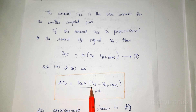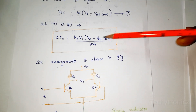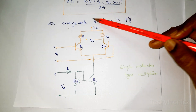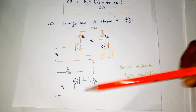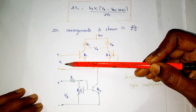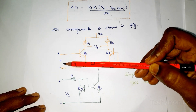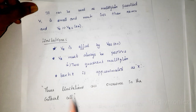We can now draw the circuit diagram for this arrangement — this is the simple emitter-coupled type multiplier circuit, where IEE is replaced by the expression involving V2. V1 must always be less than 50 millivolts, and V2 must be much greater than VBE(ON).